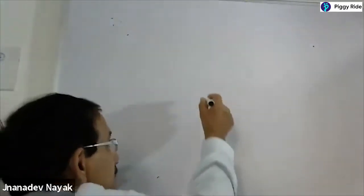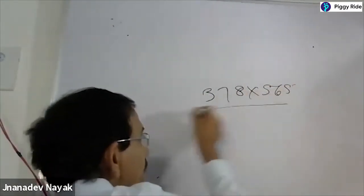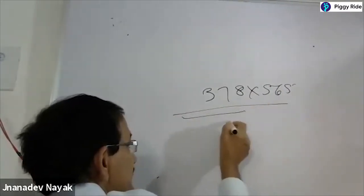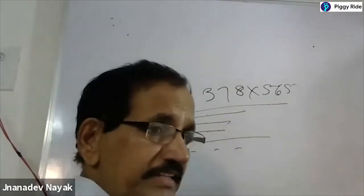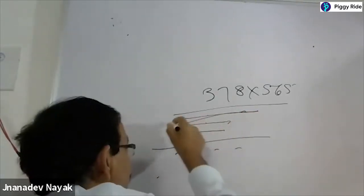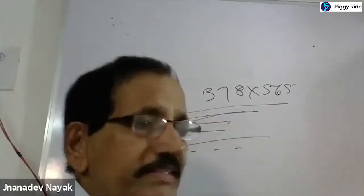I will give you an example. Suppose if you want to multiply a three-digit by three-digit number — for example, 378 into 565. In normal math, first you are multiplying with 5, then with 6, then again with 5 — there will be 4 steps. Whereas in Vedic Math, we can write the answer in only one line. That is Vedic Math.